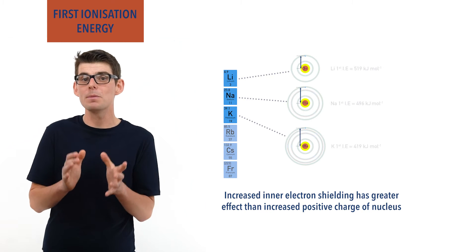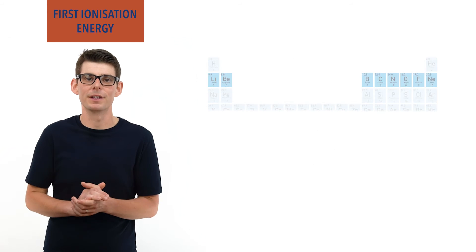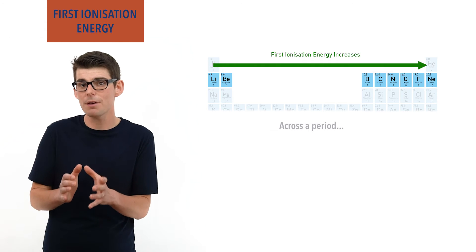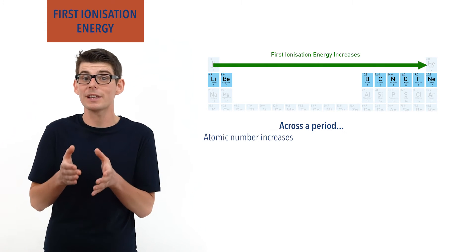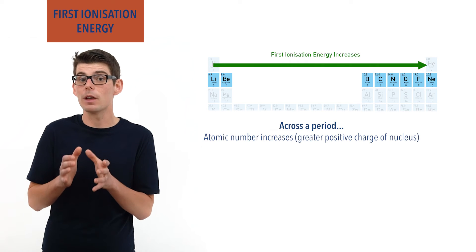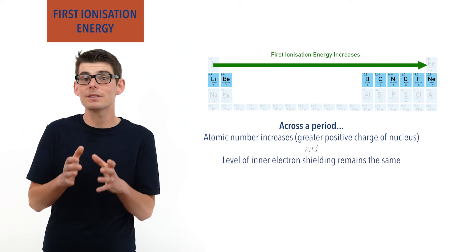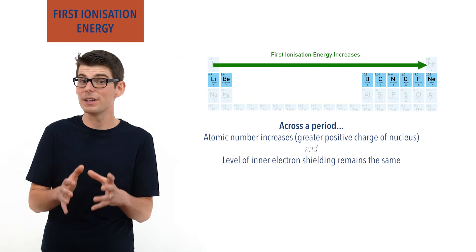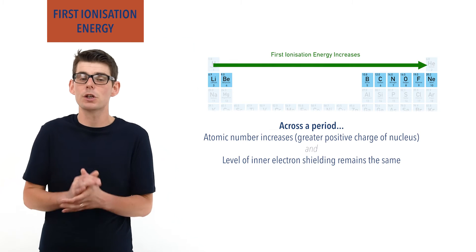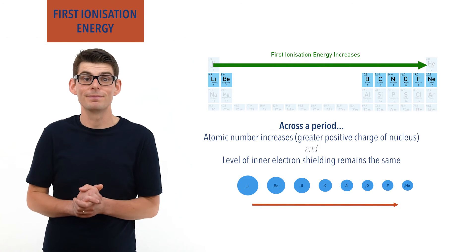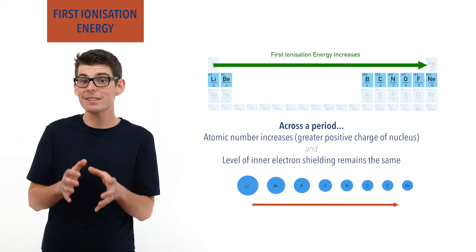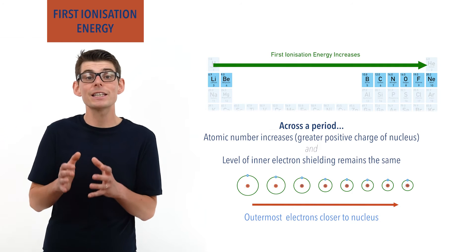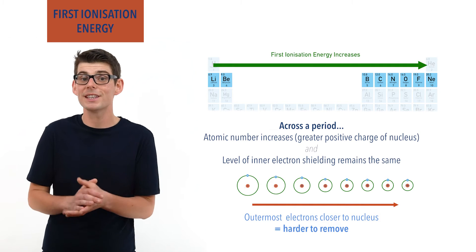This isn't the case when we move across a period. As you go across a period in the periodic table, first ionization energy increases as a trend. This is because across a period atomic number increases, meaning more protons and positive charge in the nucleus, whilst the level of inner electron shielding stays the same, as all elements in the same period have the same number of inner electron shells. As a result, the outermost electrons experience a greater attraction to the nucleus and are pulled in tighter to it, decreasing the atomic radius, increasing the strength of attraction, and making it harder to remove the electron — therefore increasing the first ionization energy.